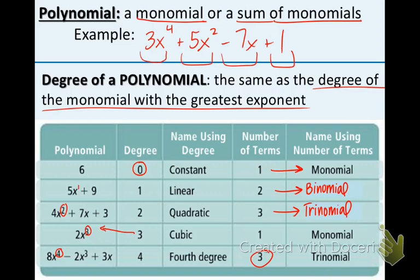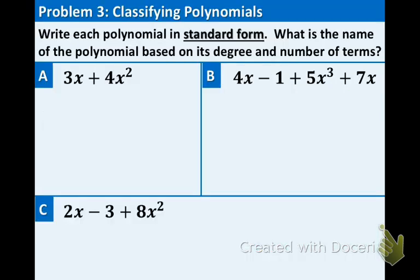I think we're ready to classify some polynomials together. Write each polynomial in standard form. Standard form just means that the biggest exponent starts and then it goes in decreasing order. And then also, what is the name of the polynomial based on its degree and terms? So, the biggest exponent in part A is obviously the 2, so we're going to write the first term 4x squared plus 3x. That is in standard form because the 2 is the biggest exponent.